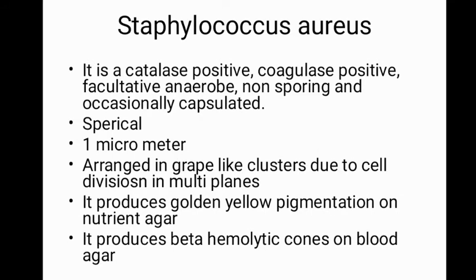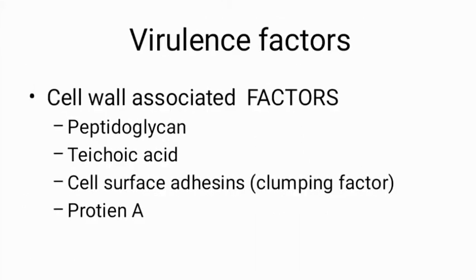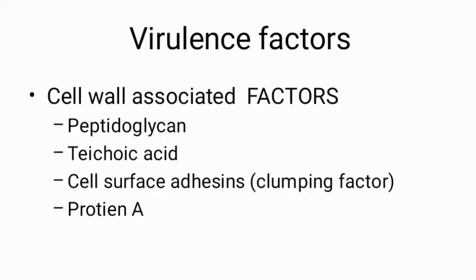Staphylococcus aureus produces golden yellow pigmentation on nutrient agar and beta-hemolytic colonies on blood agar. When cultured on nutrient agar it shows golden pigmentation, and on blood agar it produces hemolytic colonies. Next, we will discuss the virulence factors of Staphylococcus aureus.